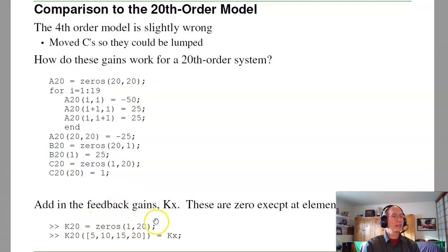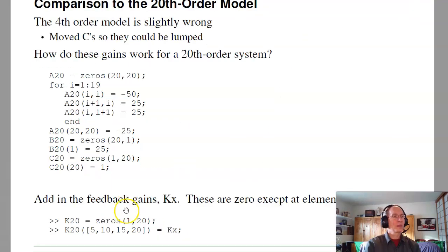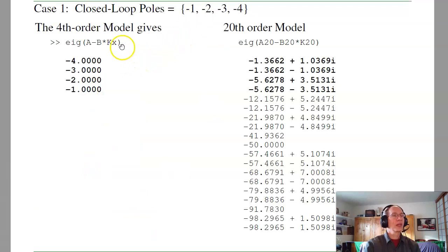My feedback gain, I should have 20 feedback gains. K is a 1 by 20 matrix. All the gains are 0, except element 5, 10, 15, and 20, because I used my lumped parameter model. If I then find the eigenvalues of the fourth order system and eigenvalues of the 20th order system, the four dominant poles should match up. And if you look, they're sort of close. The reason they're different is I'm pushing the model pretty hard. To move the poles all the way up to minus 1, 2, 3, and 4, I need a good model. My fourth order model is a little bit inaccurate, and we're putting the poles out here. It's inaccurate enough that the poles don't wind up exactly where I wanted. I'm pushing it too hard for this model.